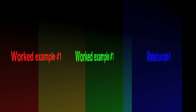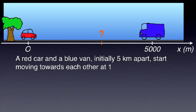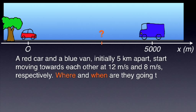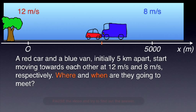It's now time for two worked examples. Worked example number one. A red car and a blue van, initially 5 kilometers apart, start moving towards each other at 12 meters per second and 8 meters per second respectively. Where and when are they going to meet? To keep the things simple, in both these and the next example, we assume that the motion of each car is uniform and we neglect the short accelerating period just after they set off. Now you might want to pause the video and try to find out the answer.